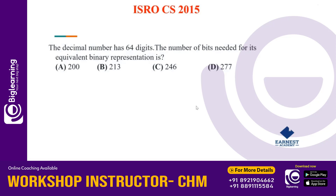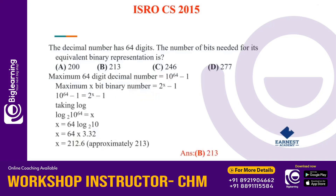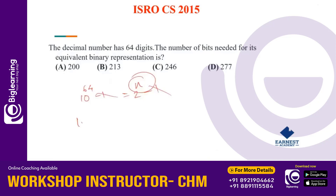The number of bits needed for the equivalent binary representation of a 64-digit decimal number: the maximum value is 10 raised to 64 minus 1. In binary, 2 raised to n minus 1. Setting these equal and cancelling, we get log base 2 of 10 raised to 64.